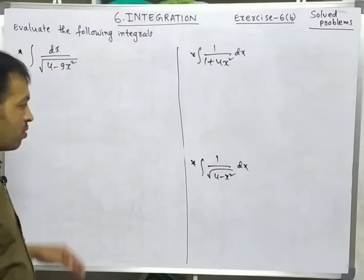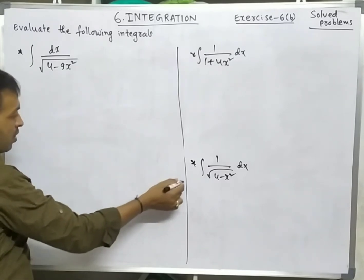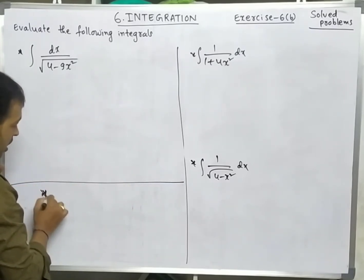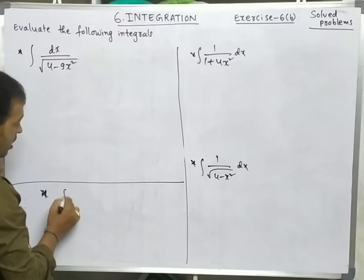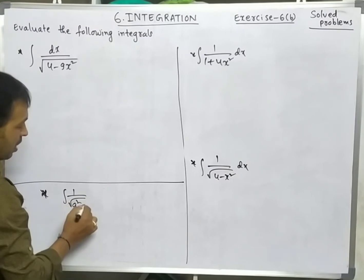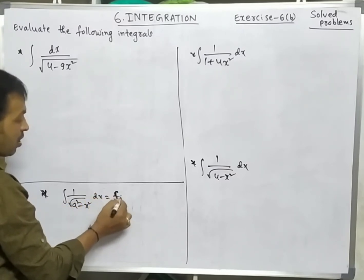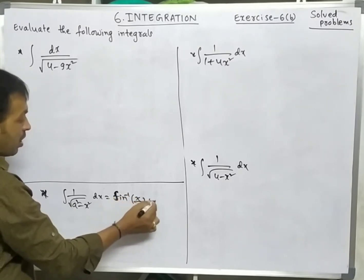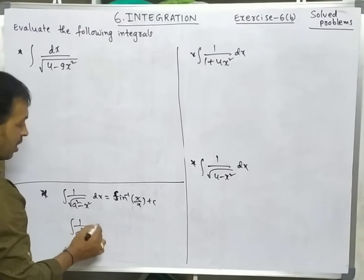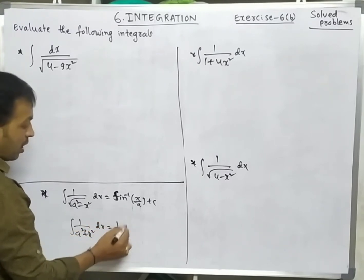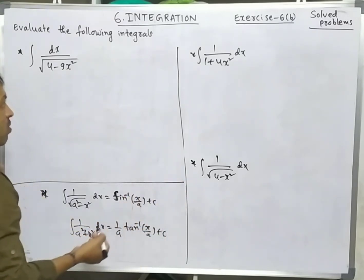These are interesting problems we can write directly in MSet or IIT examination. The formulas are: integration of 1/√(a²-x²) dx = sin⁻¹(x/a) + c, and integration of 1/(a²+x²) dx = (1/a)·tan⁻¹(x/a) + c.